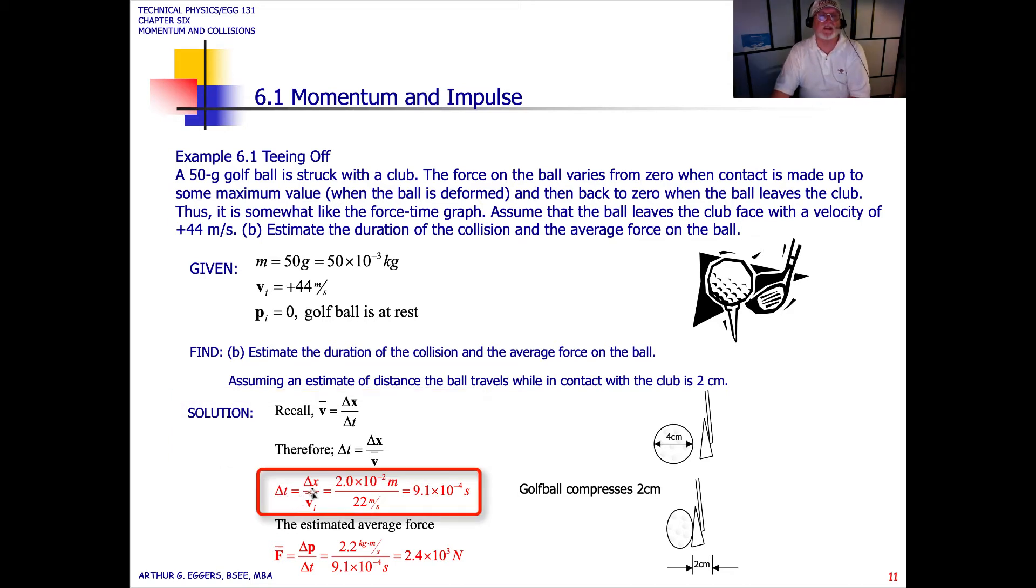Delta t then is equal to delta x by the velocity initial. We don't need the final because we're only doing on the initial side here. So, 2 times 10 to the minus 2 meters divided by 22 meters per second. We're looking at the average velocity that occurs. We come up with 9.1 times 10 to the minus 4 seconds is the amount of time that the ball compresses before it goes into decompression and flies off of the face of the club.